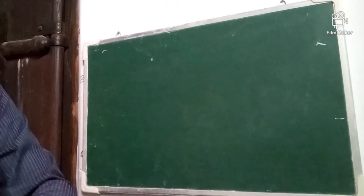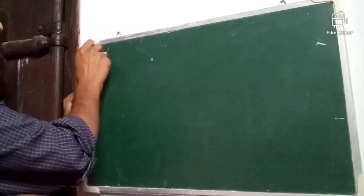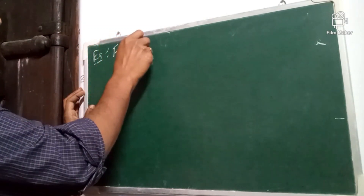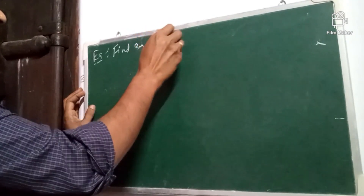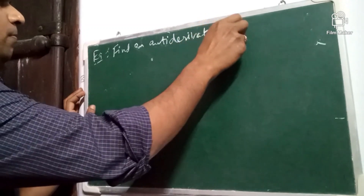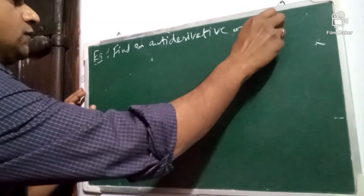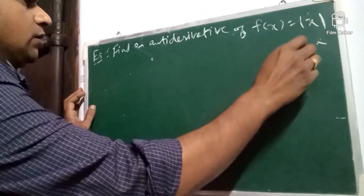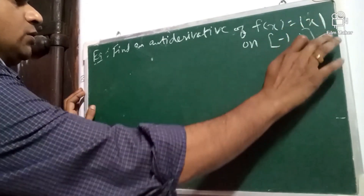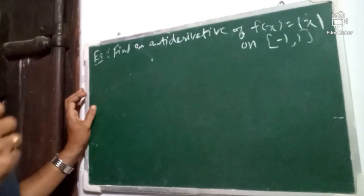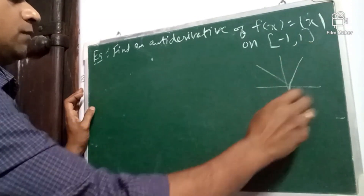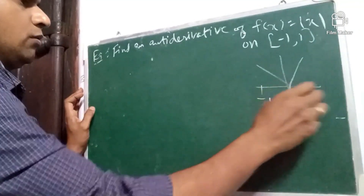Find an antiderivative of mod x. So, f of x is equal to mod x on the interval minus 1, 1. This is mod x from minus 1 to 1.